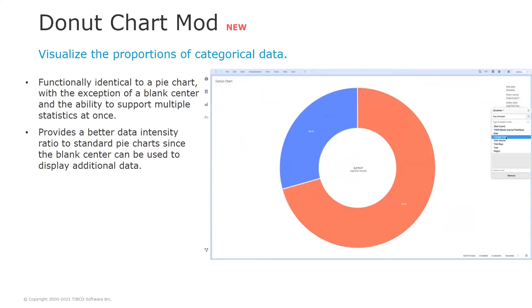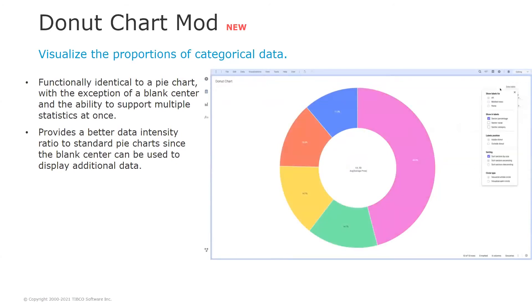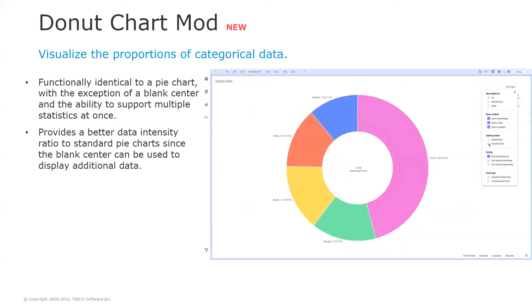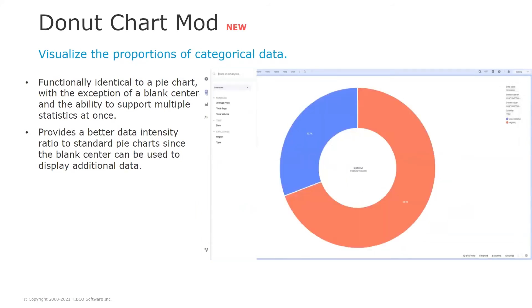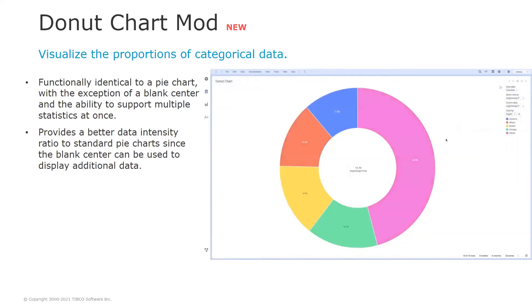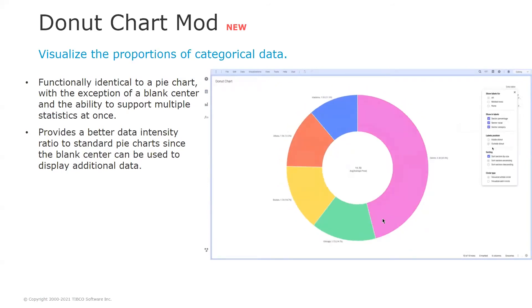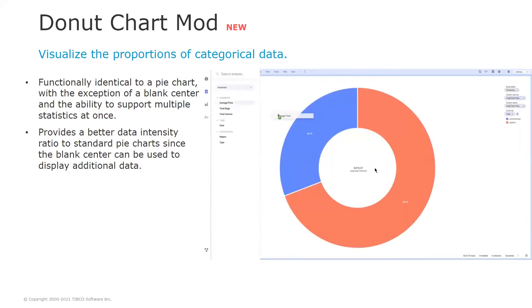Another recent addition is the Donut chart mod. This was one of the top requested visualizations in the IDEA portal and it is now available to Spotfire users, thanks to a team of students from the University of Gothenburg in Sweden. This mod is highly customizable and functionally identical to the pie chart with the exception of a blank center that can be used to display an additional indicator. It's pretty useful.